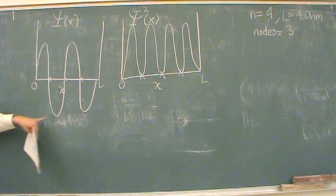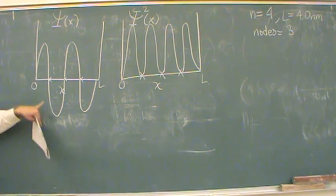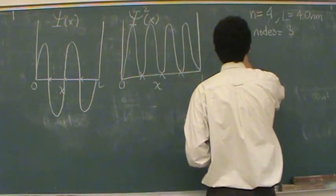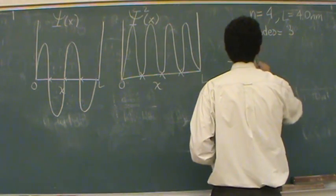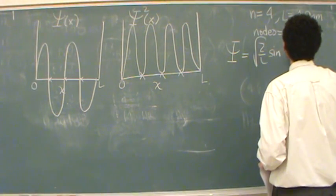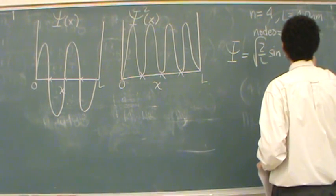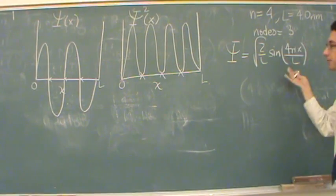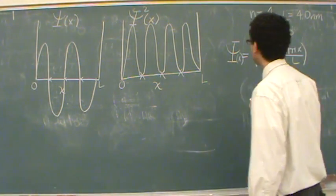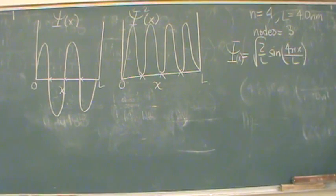So, this would be some sine function. So, psi of x would be some sine function. I don't know if you learned it in your class, but we learned that psi is the square root of 2 over L, sine, n pi x, or in this case, 4 pi x over L. So, it would be this function. This would be psi of x.